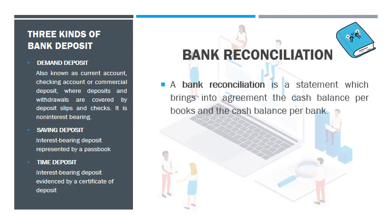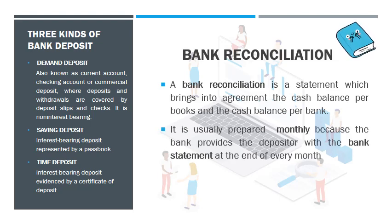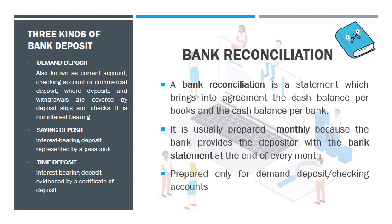Bank reconciliation is simply the reconciliation of the cash balance per books and the cash balance per bank. It is done monthly and is prepared only for demand deposit or checking accounts. Ideally, the cash balance per books and cash balance per bank should be equal because they reflect the balances of reciprocal accounts.